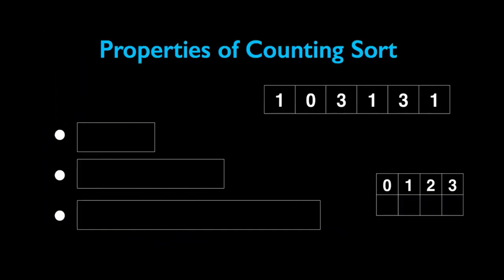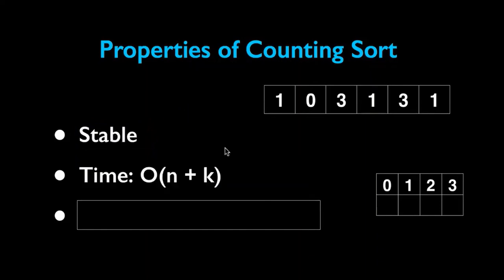Let us see some properties of counting sort. The first is, as I said, it's a stable sorting algorithm. The time complexity is O(n + k), where n is the number of items that we have in our array and k is the range of numbers.